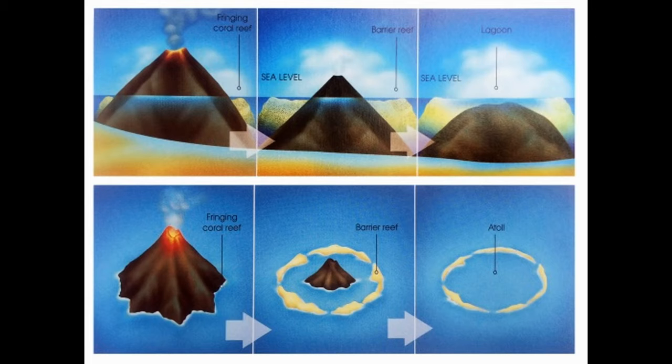Okay, now let's look at how atolls are formed. We'll look at a series of three diagrams and discuss what's happening in each. This diagram shows the first step in the process. What does the diagram show?